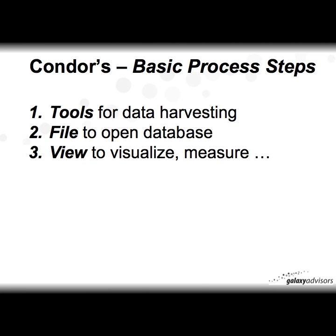Condor's basic process steps — there are really three. On the menu you're going to find Tools, File, and View. You're going to use the Tools menu for data harvesting. For each of the tools you use, you're going to create a database, and your search results will be stored in that database. A database can have more than one data set. Next, you use the File menu to open the database of your choosing, and then you use the View menu to visualize and measure. So these three steps — Tools for harvesting, File to open, and View to visualize — are what you'll be doing over and over.